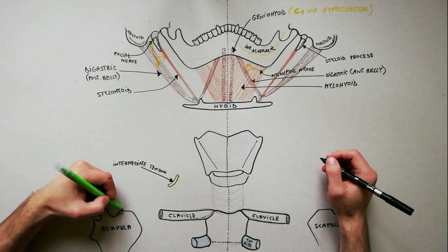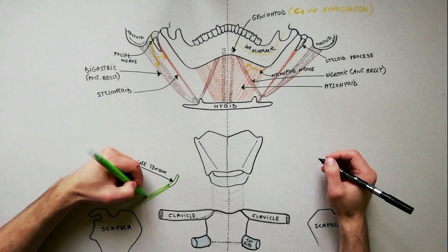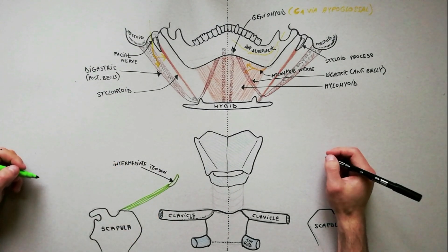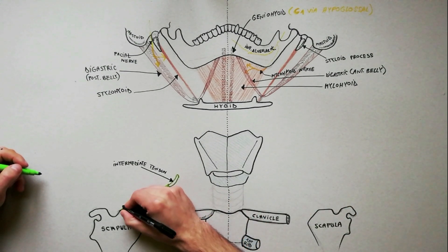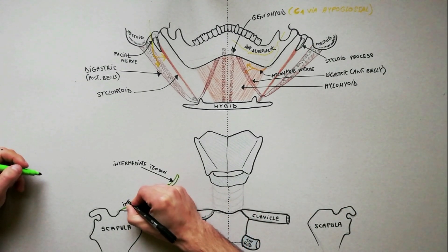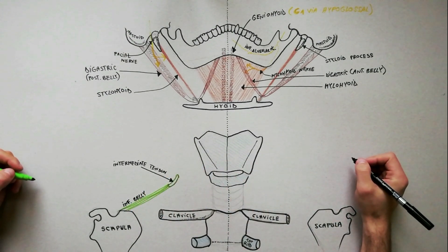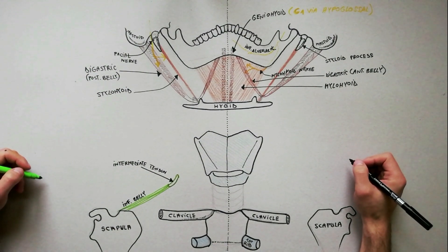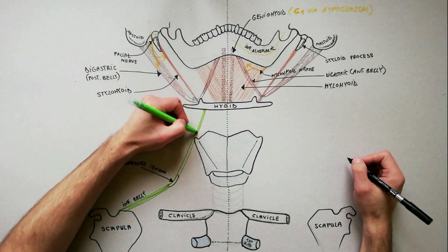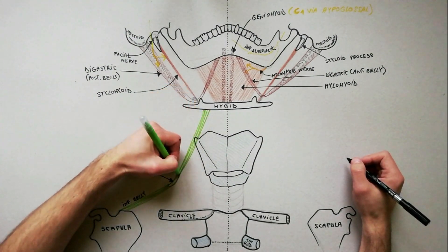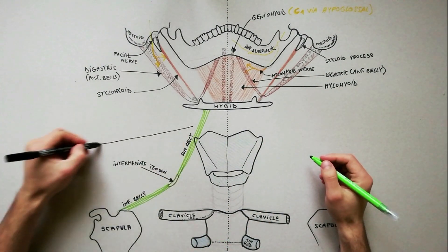The inferior belly arises from the superior border of the scapula, just medial to the suprascapular notch. From this origin, the inferior belly forms a flat, narrow fasciculus, which inclines forward and slightly upward across the lower part of the neck to end in the intermediate tendon. The superior belly proceeds almost vertically upwards from the intermediate tendon to be inserted on the lower border of the body of the hyoid bone.